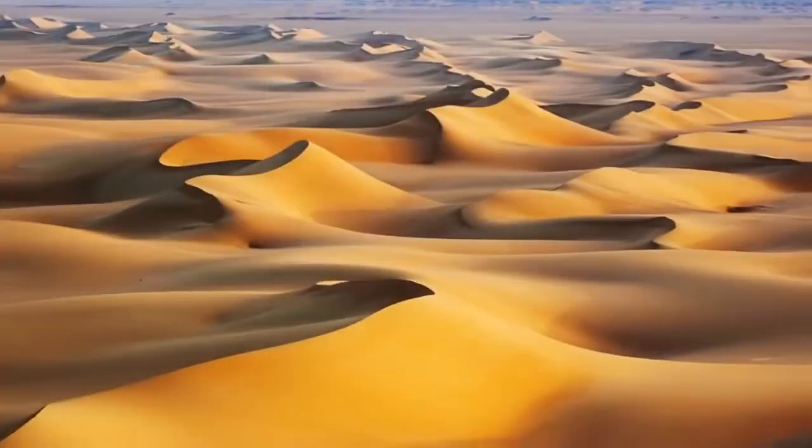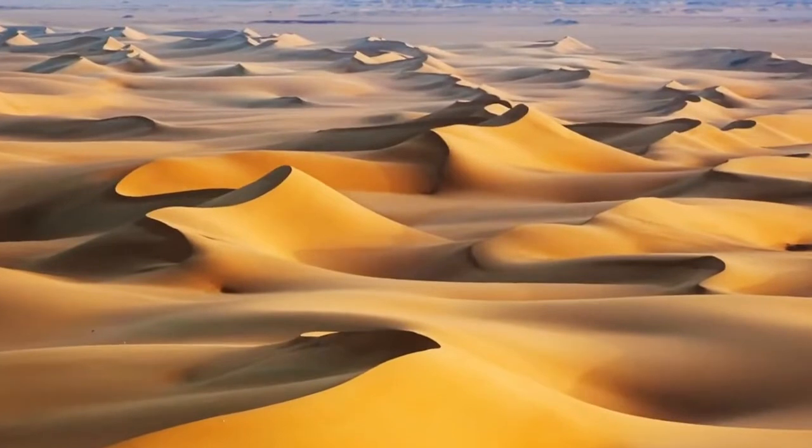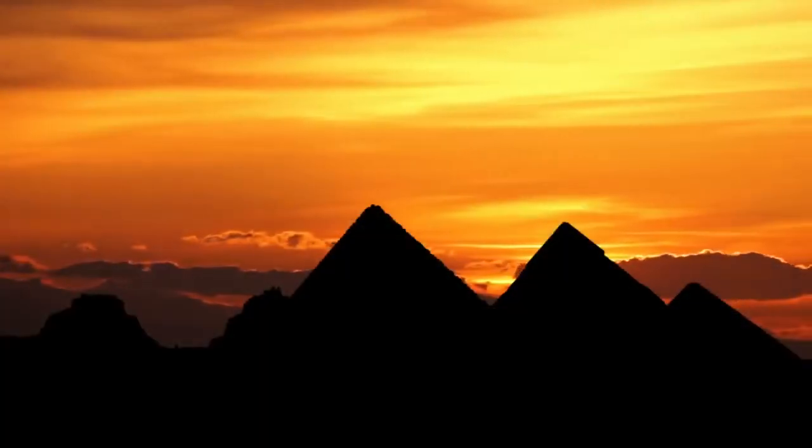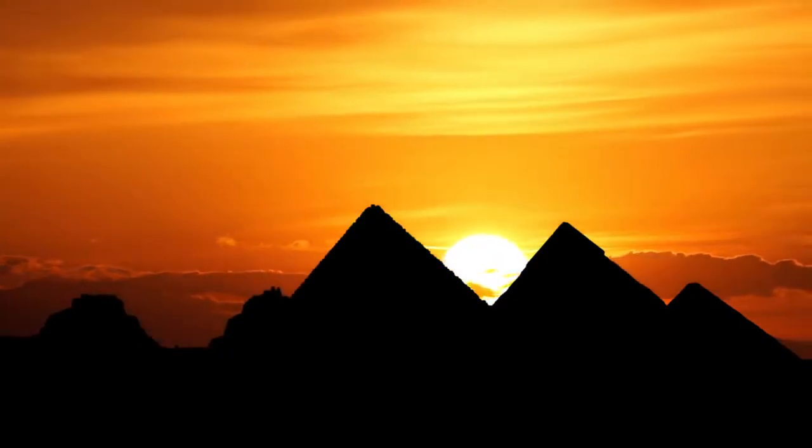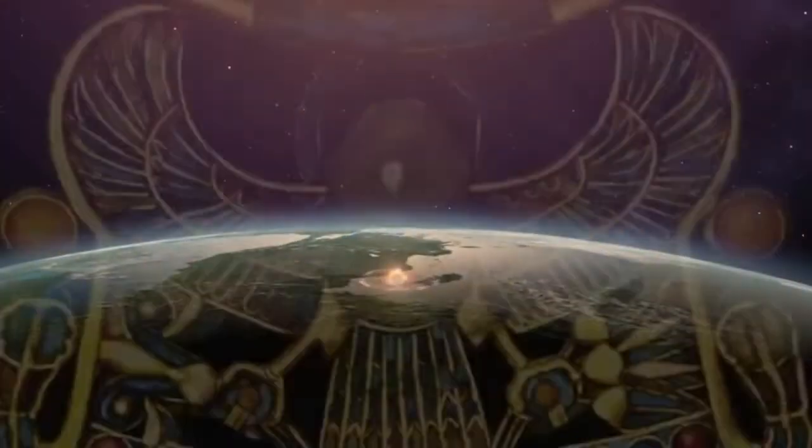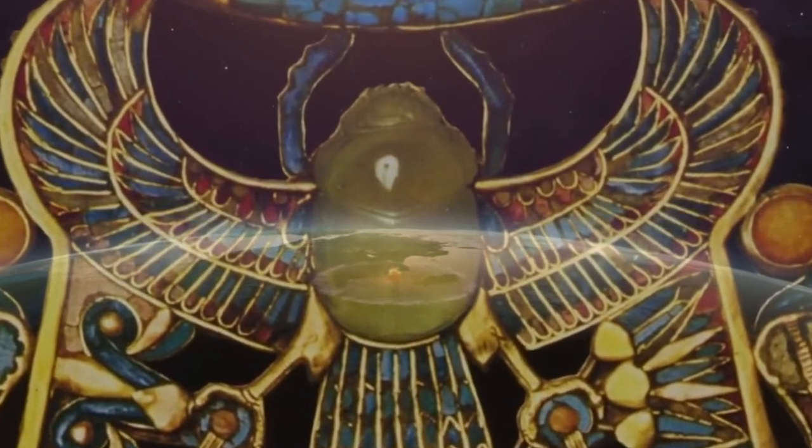When the first atomic bomb was tested in 1945 in New Mexico, it left a thin layer of similar glass across the desert sand. However, the area of glass in the Egyptian desert is vastly bigger. Whatever happened in Egypt must have been more powerful than an atomic bomb, and the stone in Tut's necklace is a souvenir of that explosion.